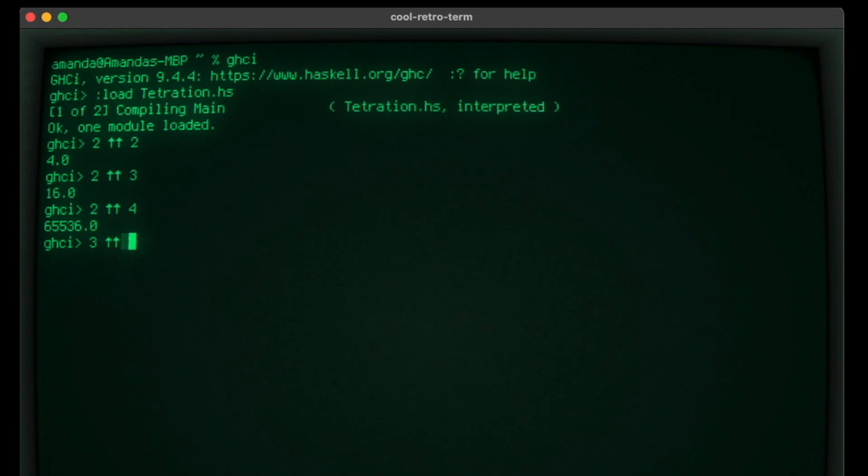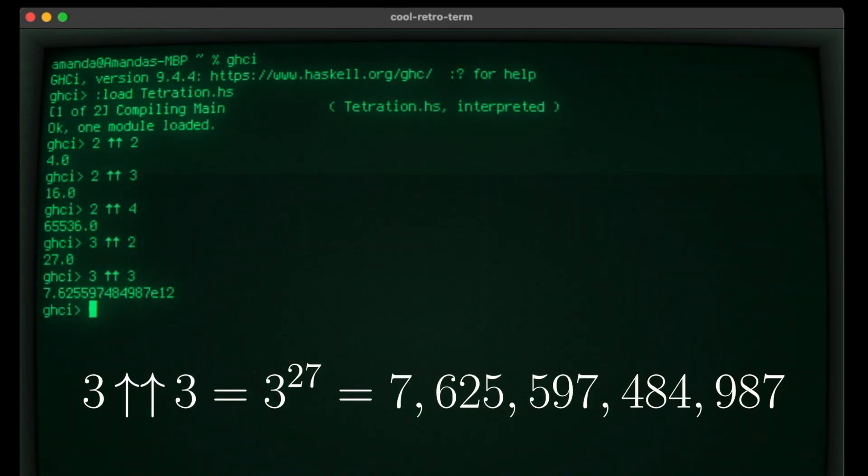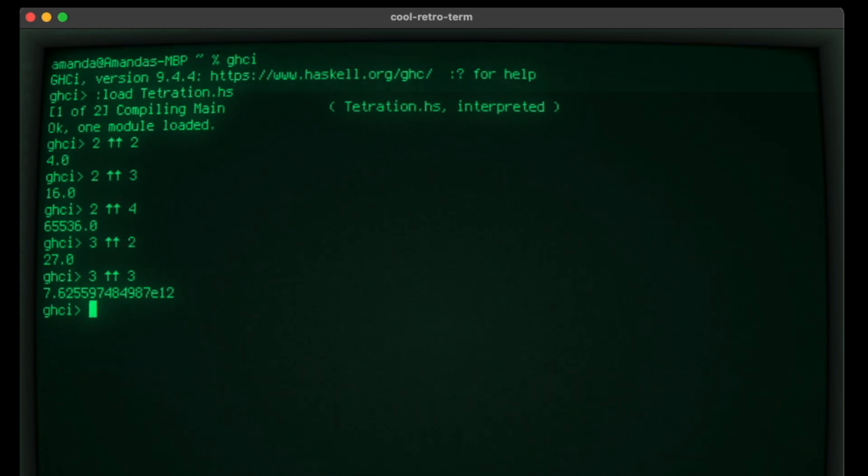We can see that 3 Tetration 2 is 27, and 3 Tetration 3 is 3 raised to the 27th power, or this huge number. Indeed, Tetration grows very fast, faster than even exponentials and factorials.